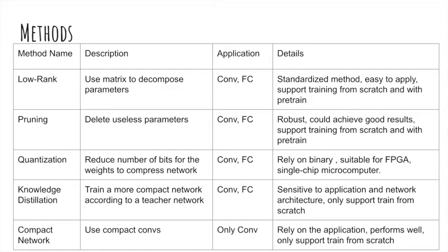The third method is quantization. Usually we save the network and its parameters are of float32 or float64, but actually we don't need that high precision, especially on some embedded systems such as FPGAs where float is not well supported. Those systems usually support 8-bit or even lower such as 2-bit or 4-bit integer types. Quantization converts the float to integers so as to compress the network. The number of parameters doesn't change, but for each parameter the storage needed is smaller. A float32 needs 4 bytes, but if you quantize the model to 2-bit, 4-bit, or 8-bit, then it only needs 1 byte. It's suitable for FPGAs and single chip microcomputers which rely on binary encoding.